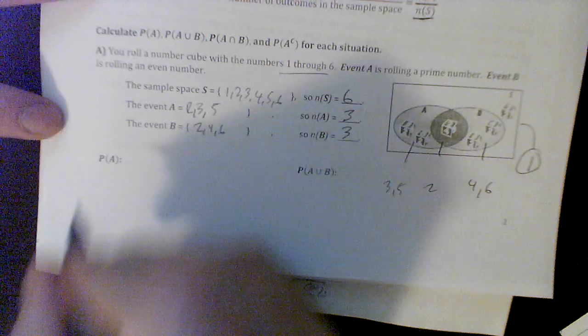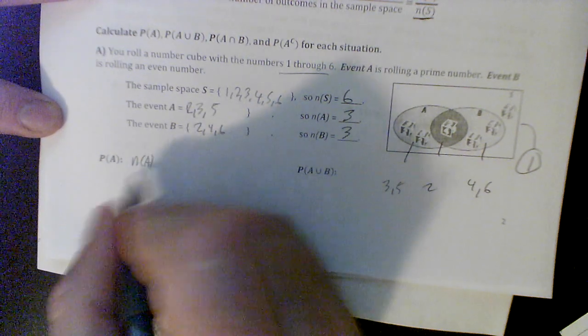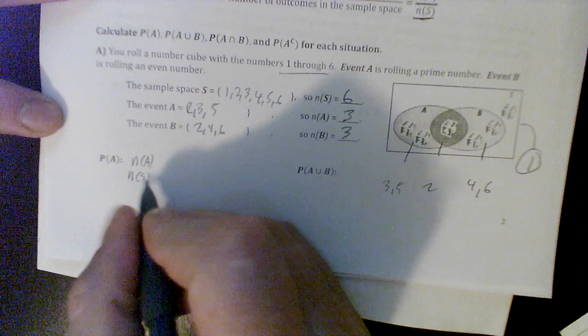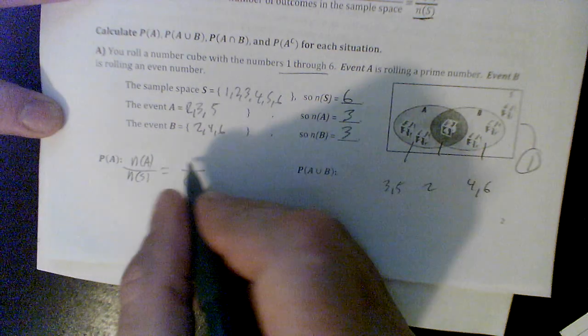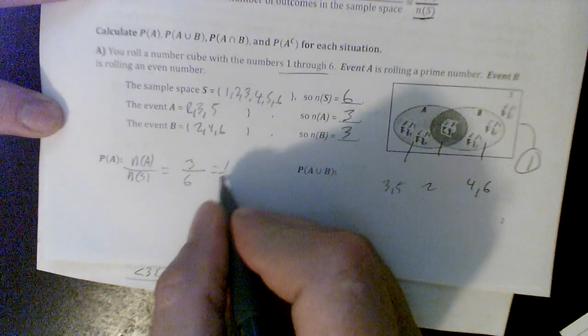So what's the probability of A? The probability of A is the number in A over the number of the sample space. The sample space is a die roll of 6, and the number of A is 3, so our probability is 1 half.